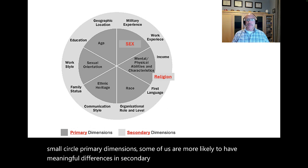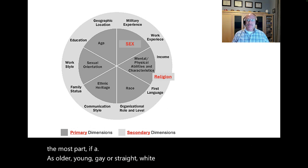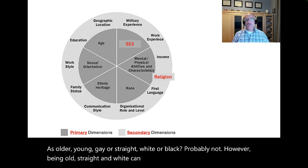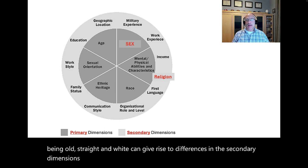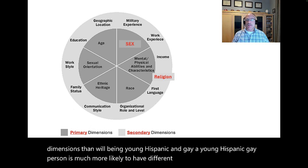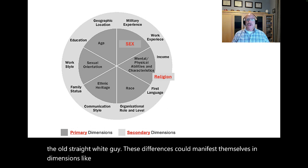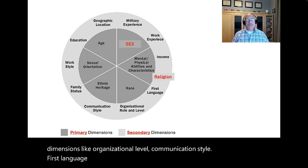Does it really matter for the most part if a worker is older, young, gay, straight, white, or black? Probably not. However, being old, straight, and white can give rise to differences in the secondary dimensions compared to being young, Hispanic, and gay. A young, Hispanic, gay person is much more likely to have different secondary dimensions than the old, straight, white guy. These differences could manifest themselves in dimensions like organizational level, communication style, first language, and even family status.